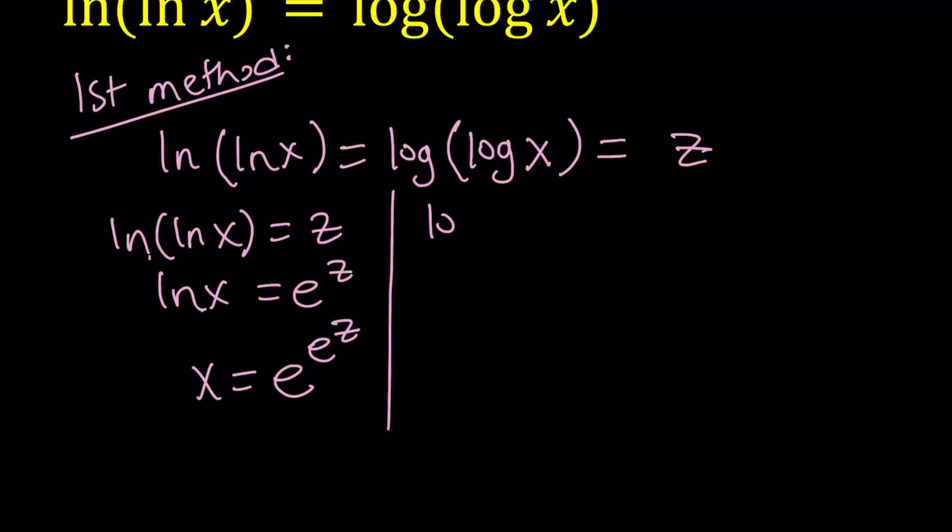Let's go and work on this one now. We have log log x equals z. Since the base is 10, you know, when we don't write it, it's base 10. Hopefully, you know that. We can say log x equals 10 to the power z by using the definition of logarithms, and then using the definition one more time, x becomes 10 to the power 10 to the power z.